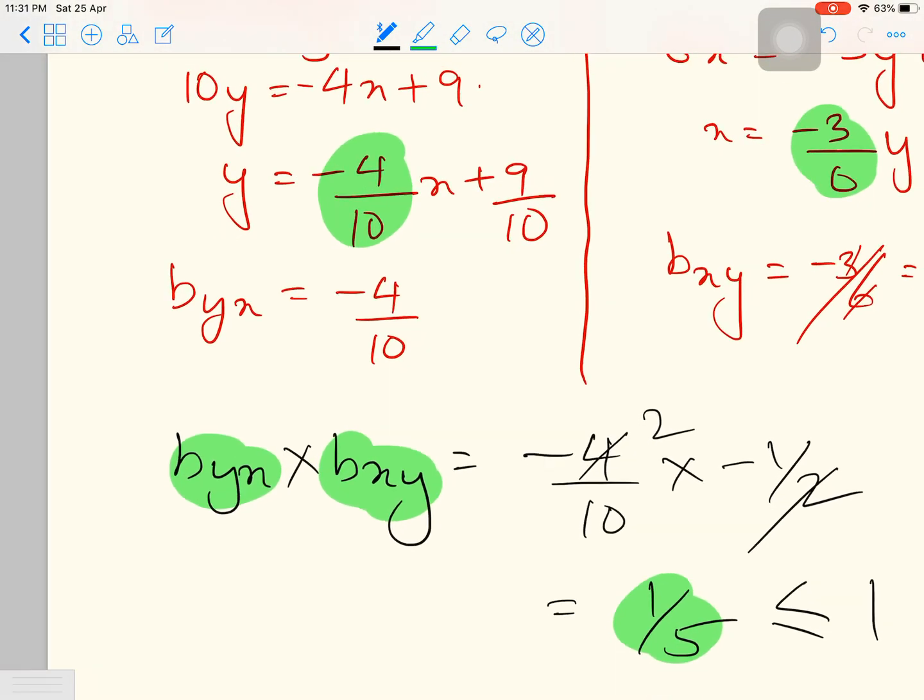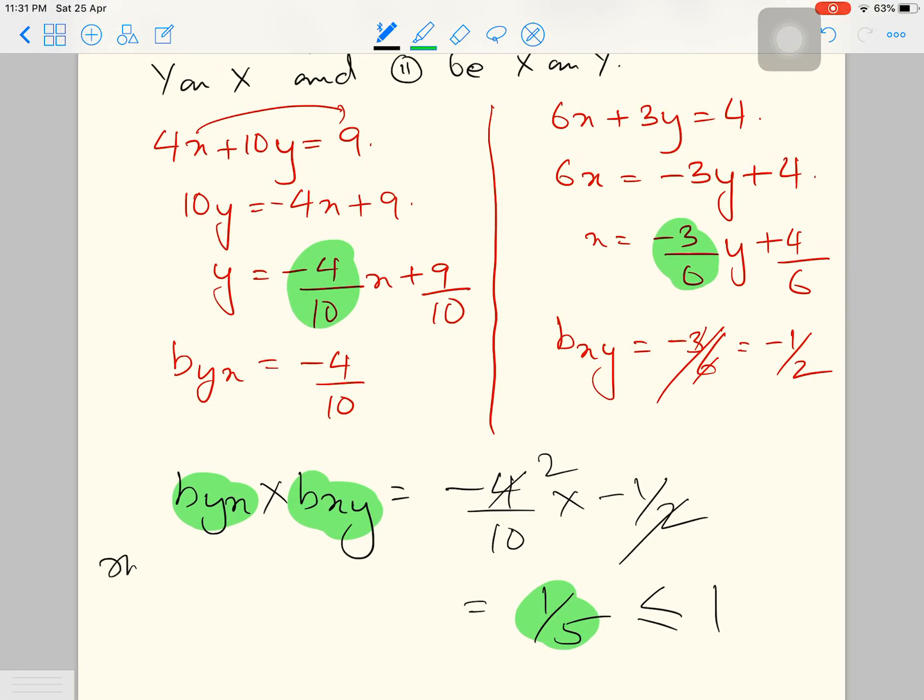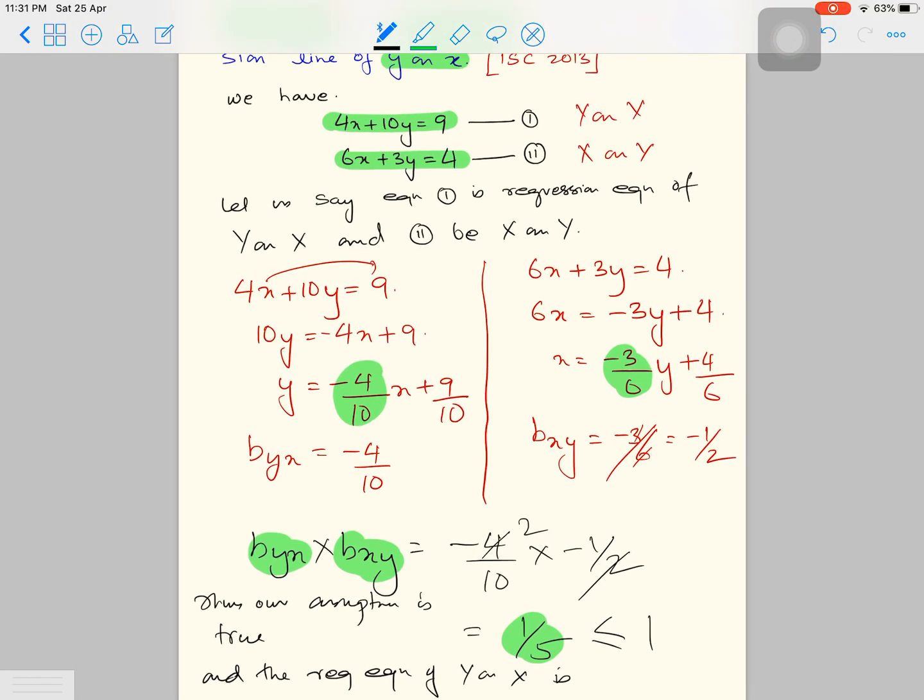So we conclude by saying thus our assumption is true, and the regression equation of y on x is 4x plus 10y equals to 9. That would be our correct answer. Let me highlight and show it to you.